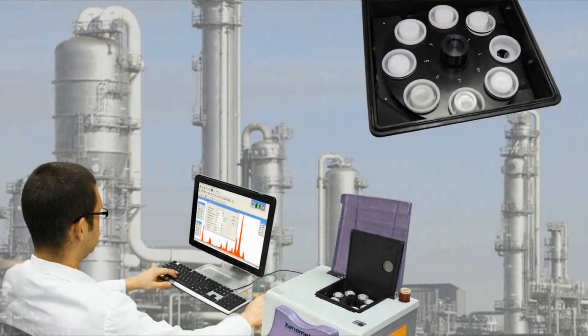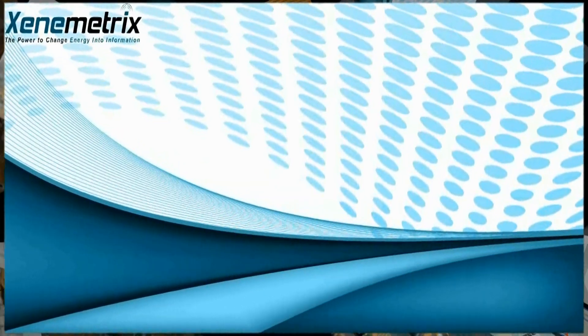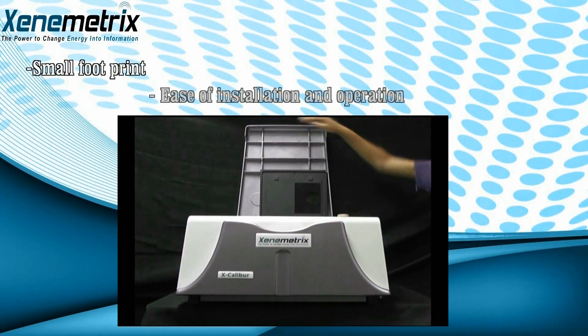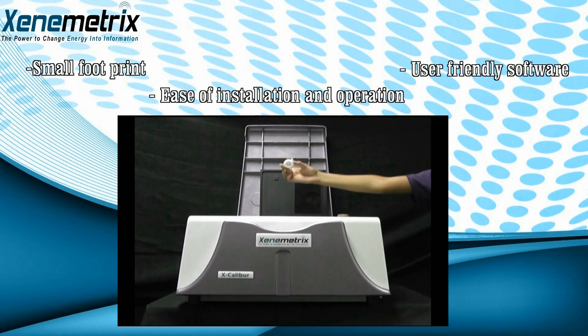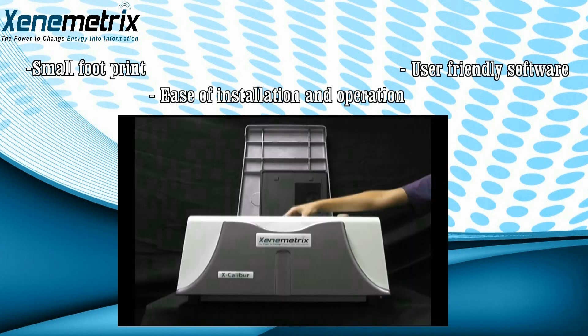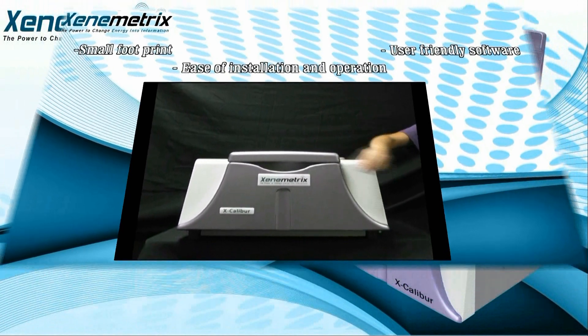The Excalibur is a compact benchtop spectrometer with the performance of a full laboratory floor-standing system. This is what has made the Excalibur one of the most popular EDXRF systems in the world in recent years. Its small footprint, ease of installation and operation, and user-friendly software makes Excalibur the most flexible system in the market, providing a great solution for both R&D and production floor demands.